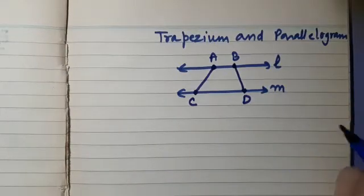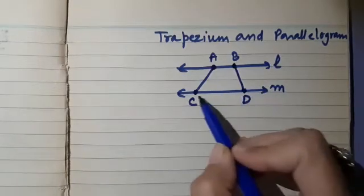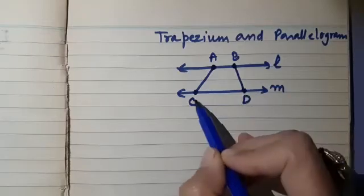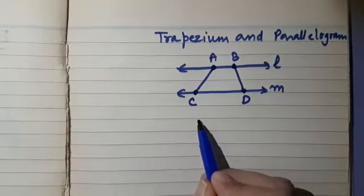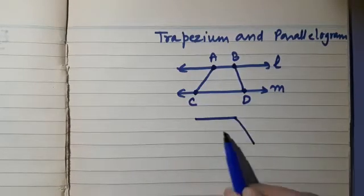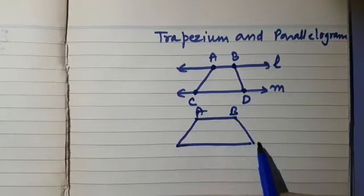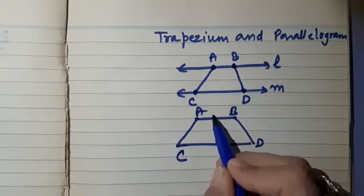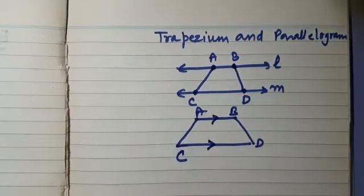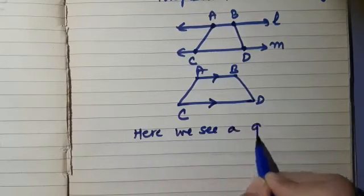Now you can see a closed figure. Yes, ABDC is a simple closed curve. So this is ABDC. Notice that AB is parallel to DC — so here we see a quadrilateral.